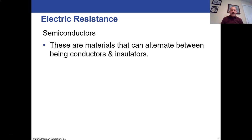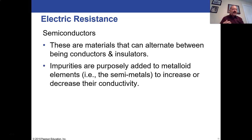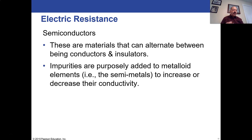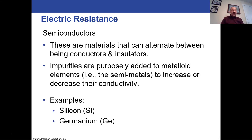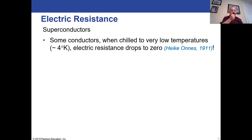Semiconductors are materials somewhere between conductors and insulators — somewhere between freely sharing electrons and not sharing at all. Typically these are metalloids, also called semi-metals, found on the periodic table between the nonmetals and the bulk of the metals: things like silicon, germanium, arsenic, and boron. Impurities are purposely added to semiconductors to increase their conductivity — silicon is the most common, and is doped with impurities to either add or remove extra electrons.